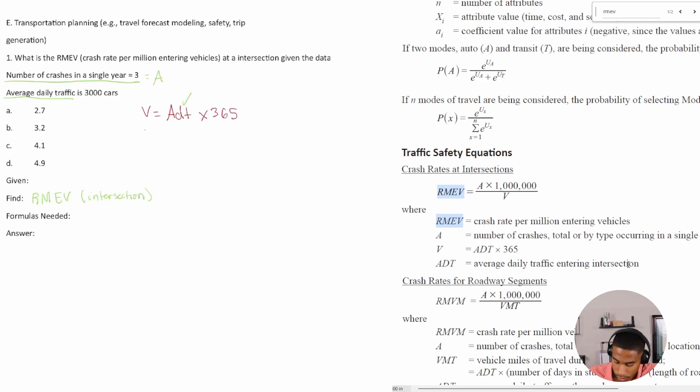All right, so V is equal to 3,000 times 365. All right, so what does our V end up totaling to? So for V we get 1,095,000.